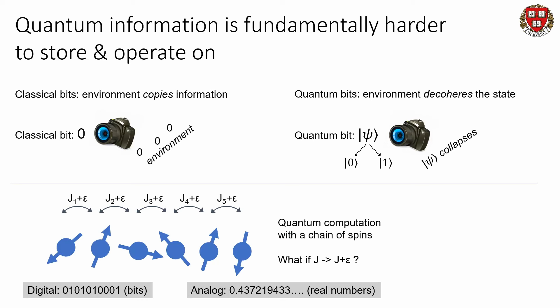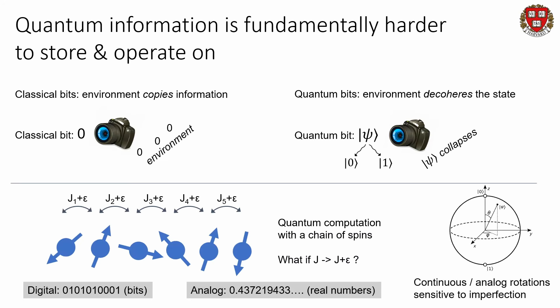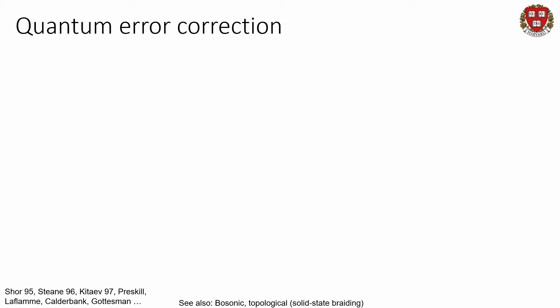This sensitivity is not unique to quantum systems. There's a very deep reason we use digital classical computers built out of bits — zeros and ones — and not analog classical computers, which can represent real numbers and are potentially very powerful, but are very hard to correct errors because they're not discretized. Similarly, if you're trying to do a computation with a chain of spins, you're going to be very sensitive to continuous or analog rotations that are intrinsically sensitive to imperfections. So if we're going to use quantum mechanics for computation, we definitely need some way to be able to correct errors.